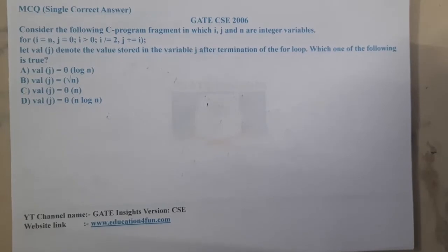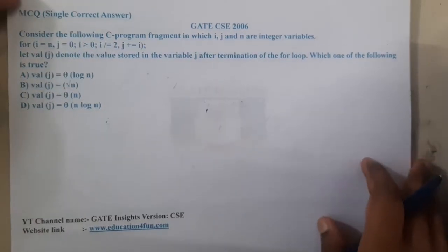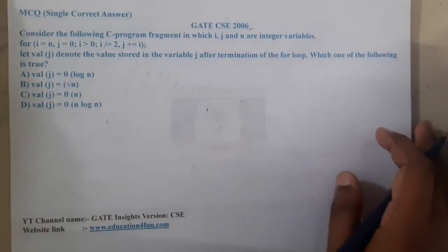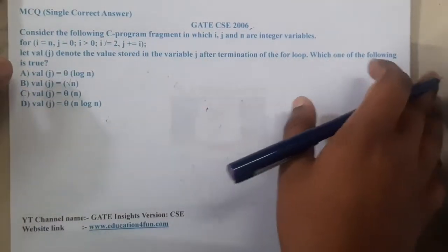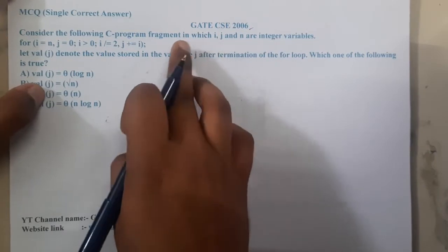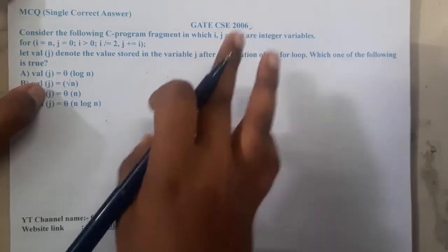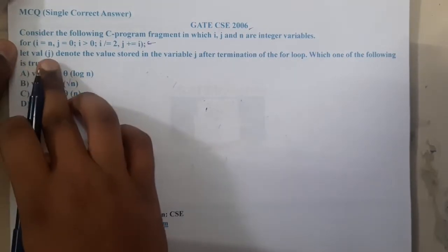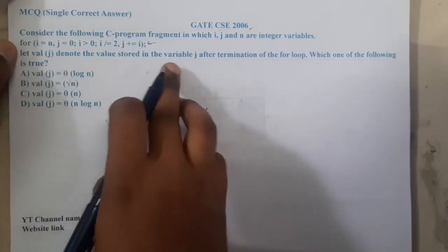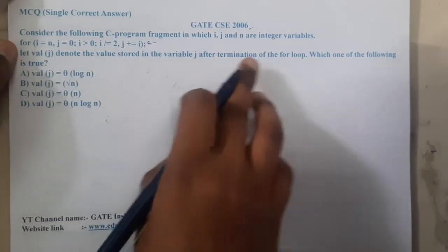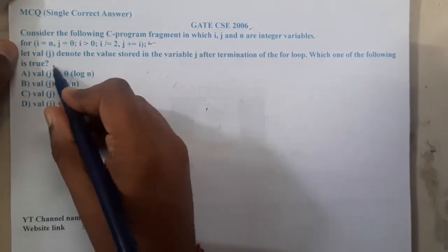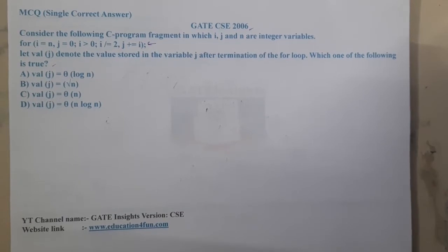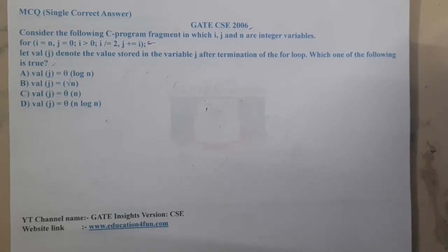Hello guys, we are back with our next lecture. In this lecture let us go through the next question. This question belongs to GATE CSE 2006. The question is: consider the following C program fragment in which i, j, and n are integers. They gave a for loop, and let val of j denote the value stored in variable j after termination of the loop. Which of the following is true? They are asking in terms of complexity or the value.